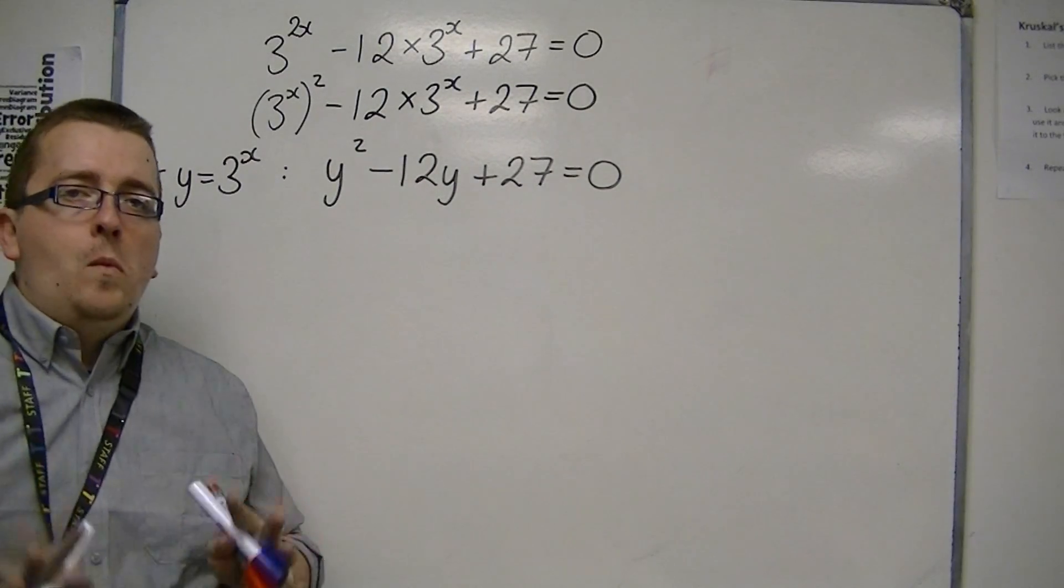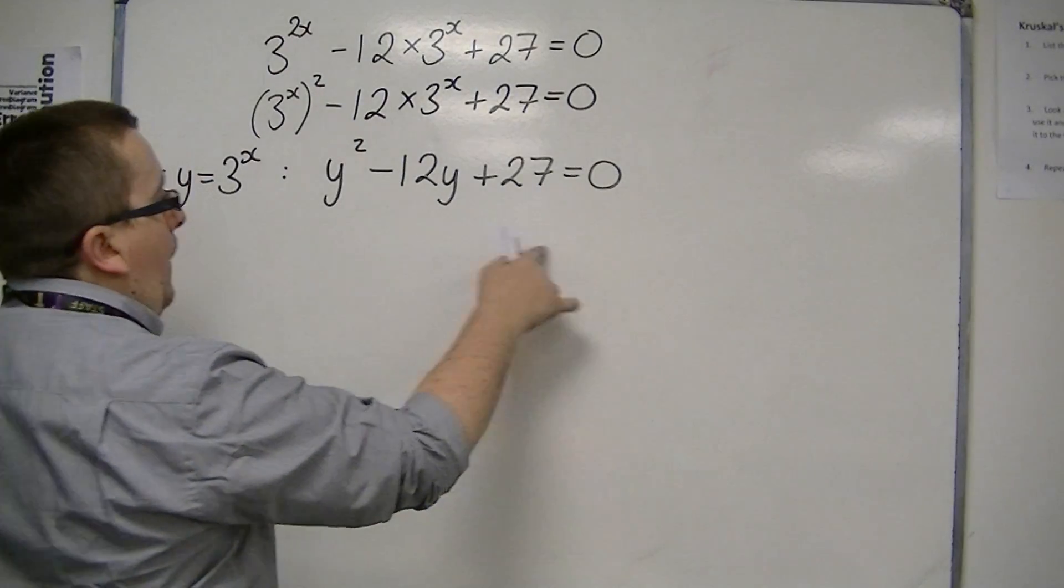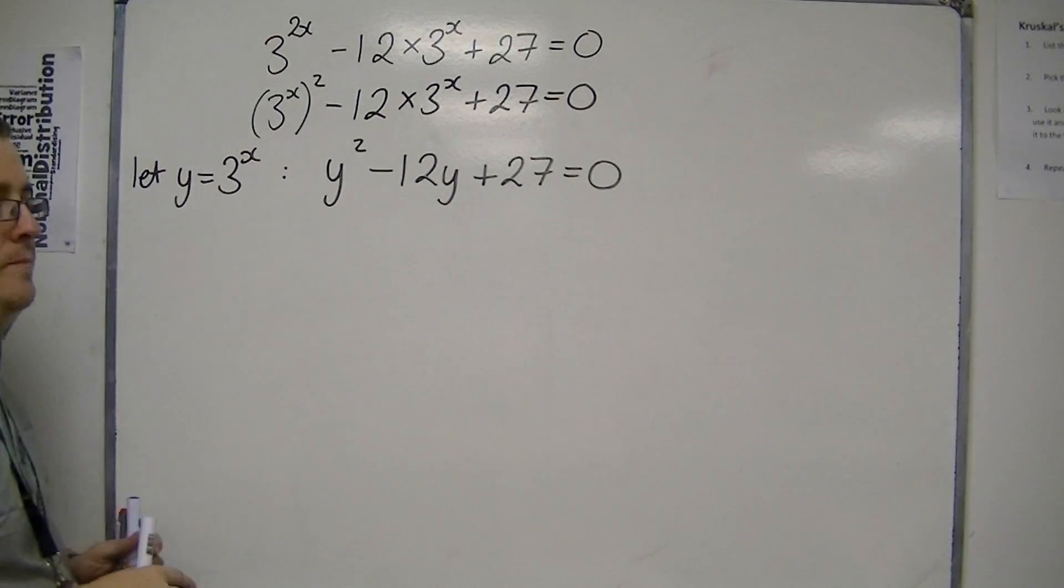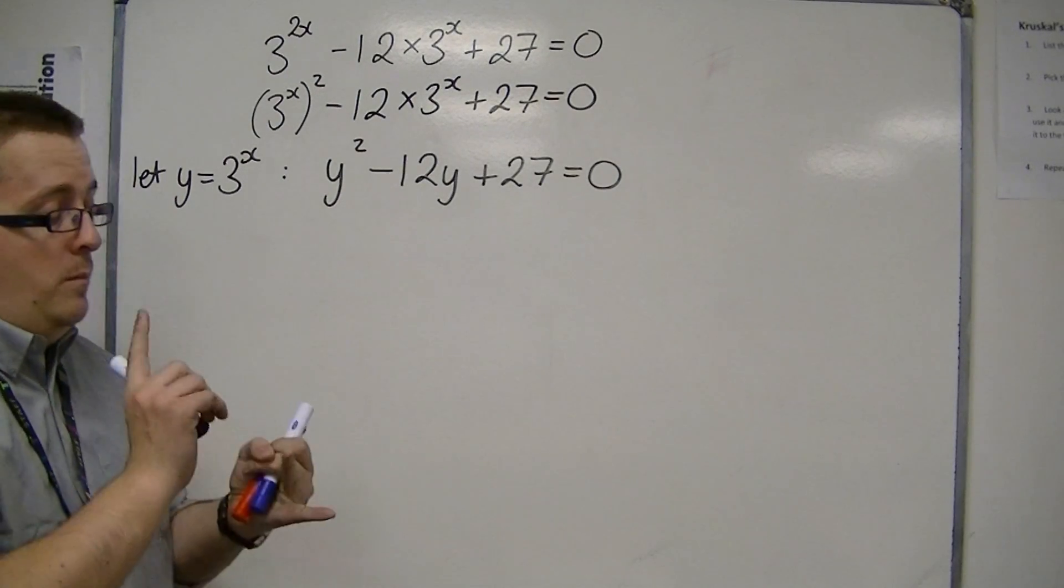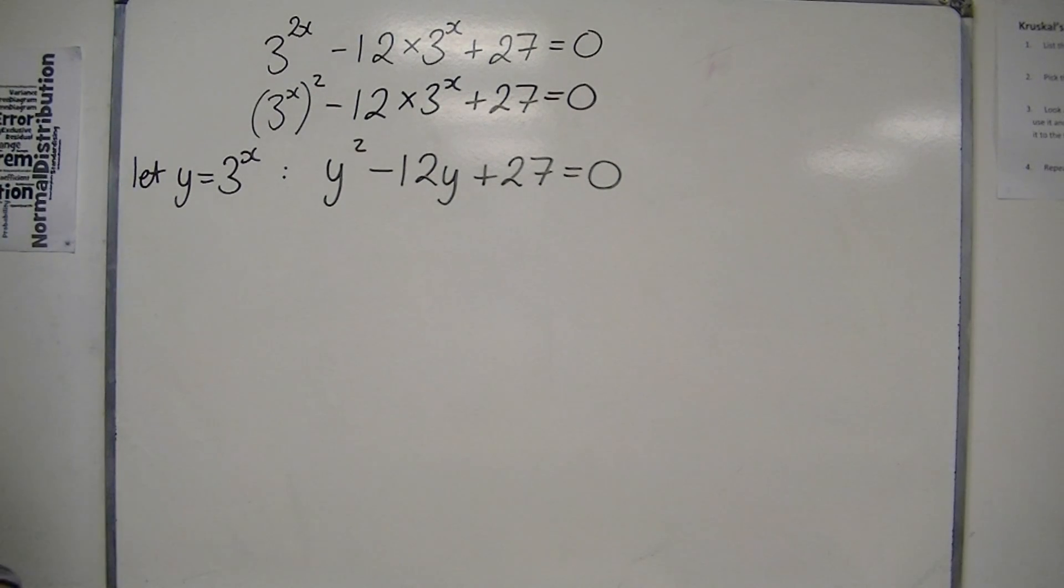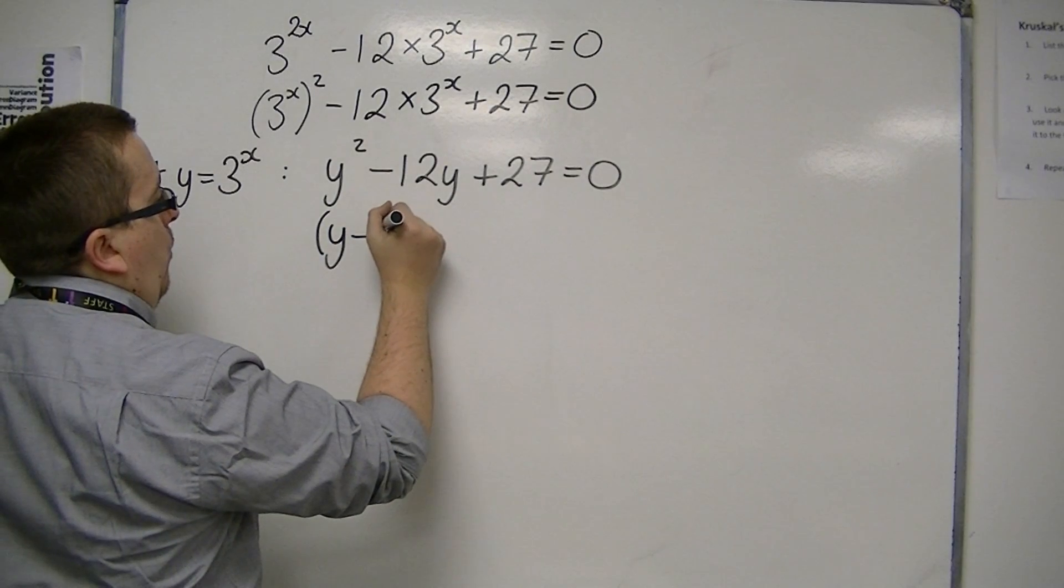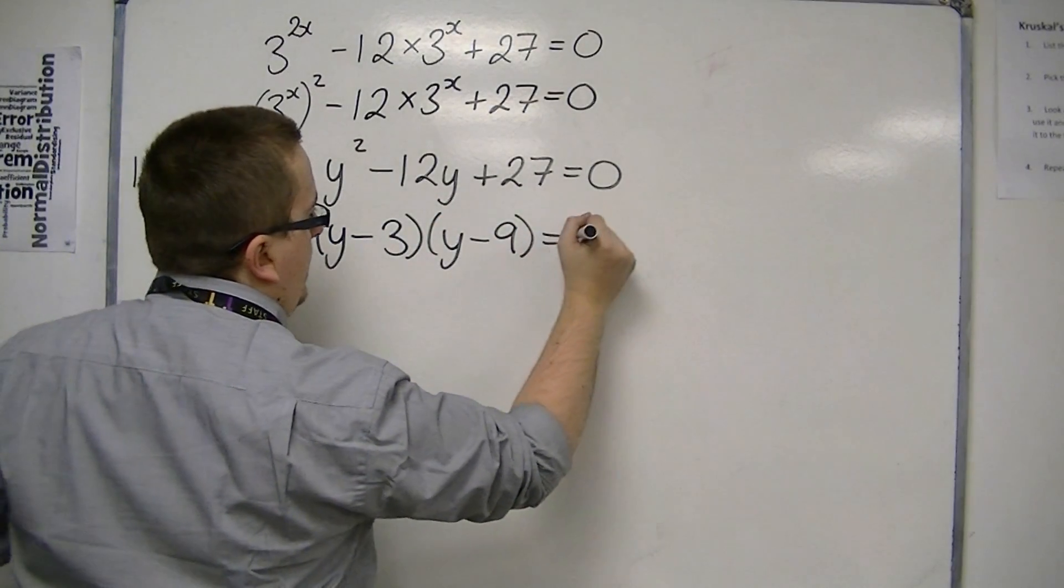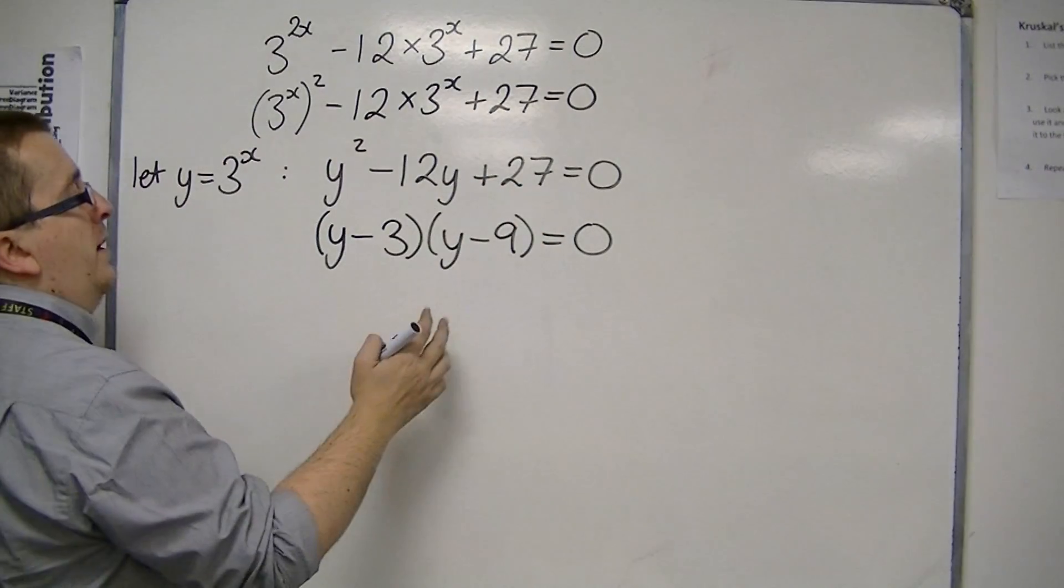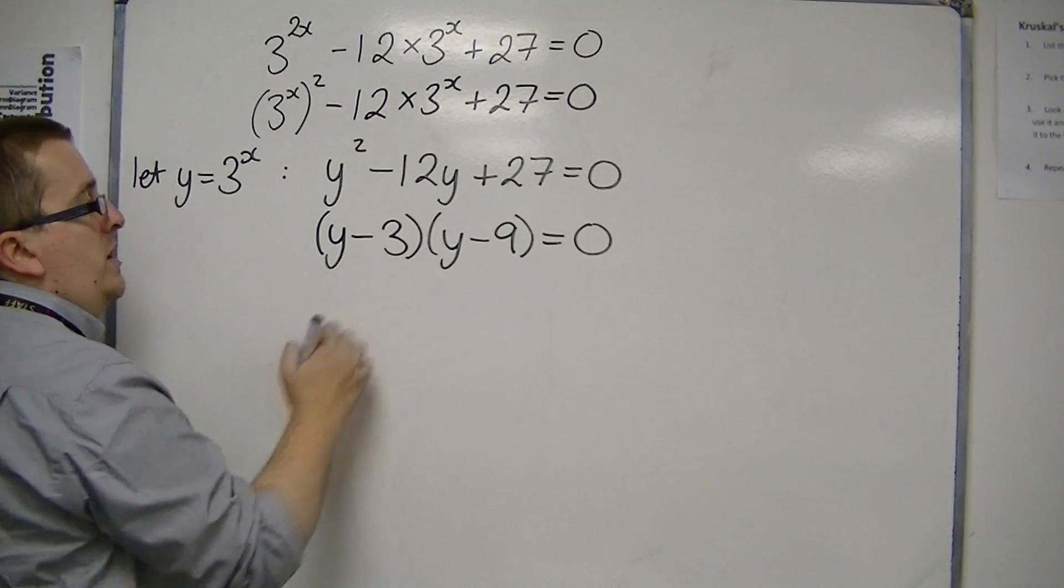And so I now have a quadratic, as I expected. So this is a quadratic equation which I can now solve. You can solve using quadratic formula, completing the square, or factorising. This can be factorised. You would get y minus 3, y minus 9 is 0. Two numbers that multiply together make 27 but add together make minus 12 is minus 3 and minus 9.